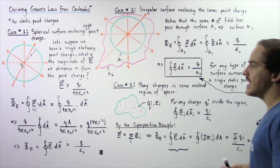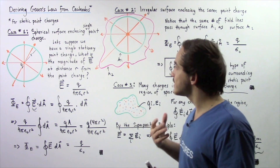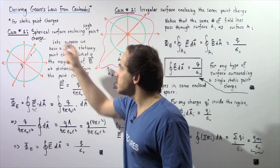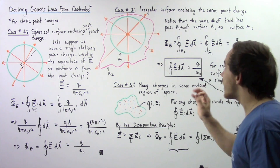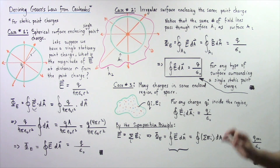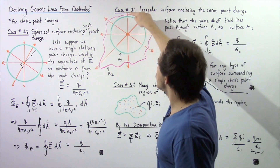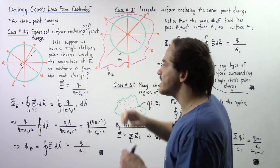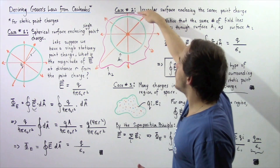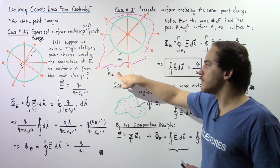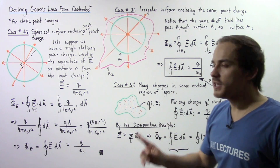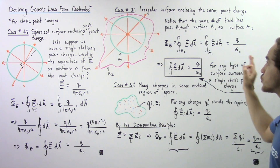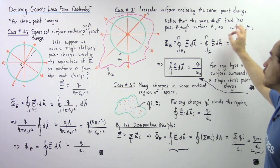Now let's move on to case number two, a slightly more complicated case. Instead of examining a spherical region, let's examine an irregular surface enclosing that same static point charge. Earlier we used the spherical surface A1. Now we examine some other shape — the red region — which we call surface A2. Notice the following important point: the same number of electric field lines pass through surface A1 as through surface A2.